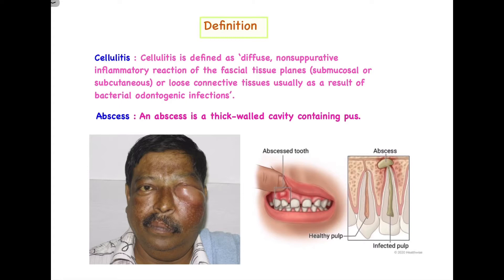This reaction is largely limited to the facial tissue planes — it may be submucosal, subcutaneous, or involve loose connective tissue. Because it inherently involves loose connective tissue, it is diffuse in nature. Cellulitis usually occurs because of a bacterial odontogenic infection — there must be an existing odontogenic reaction within the tooth for cellulitis to develop.